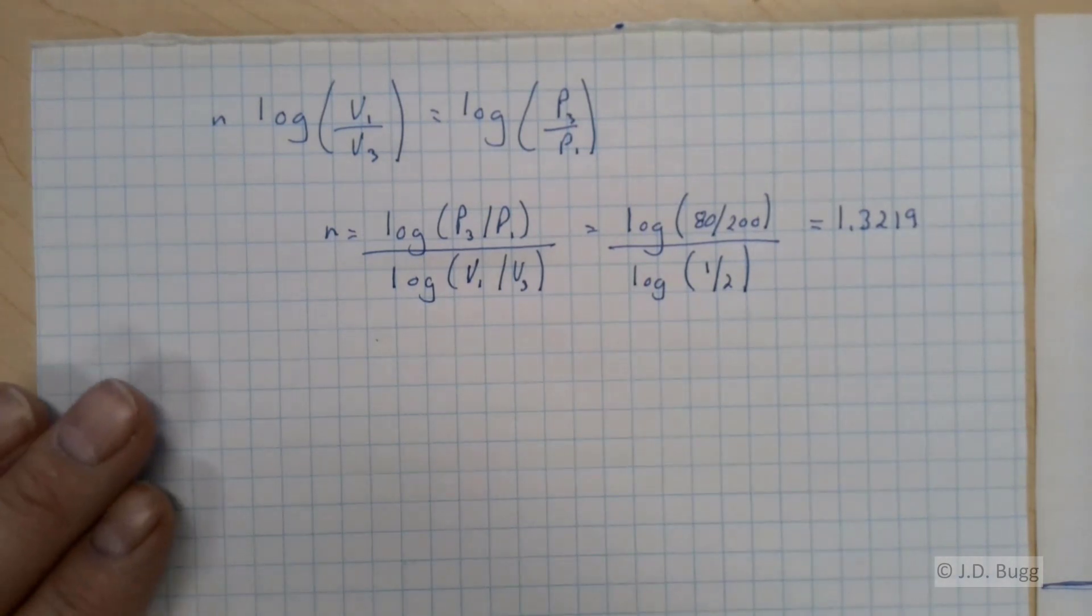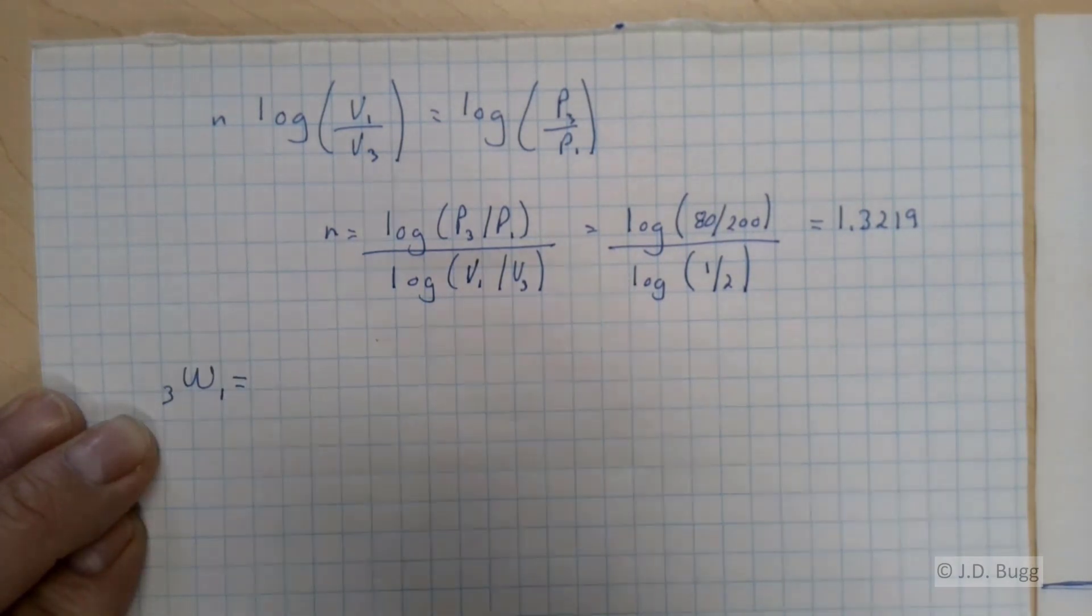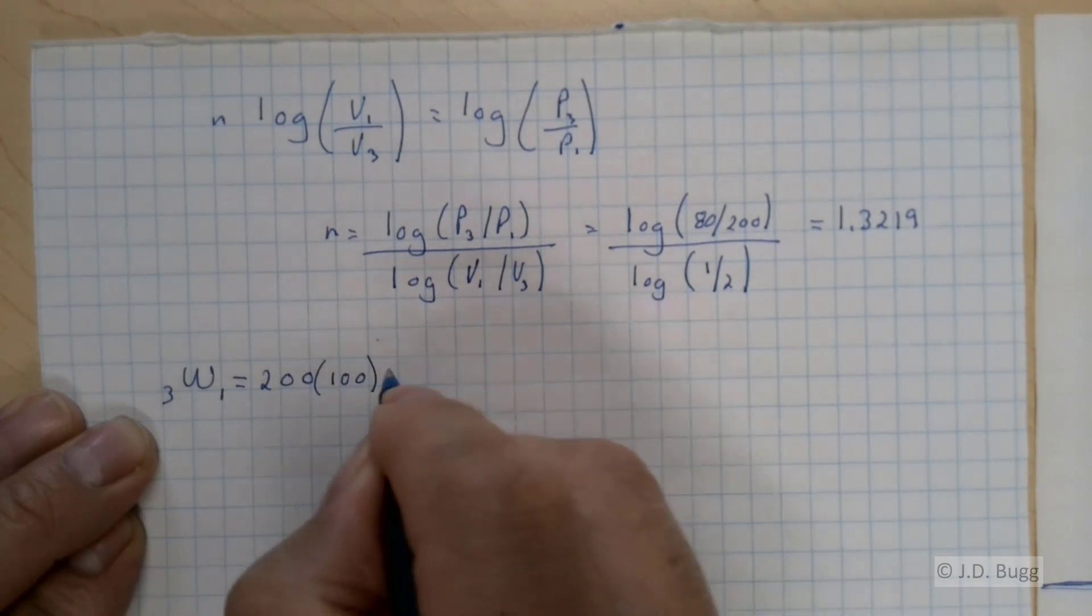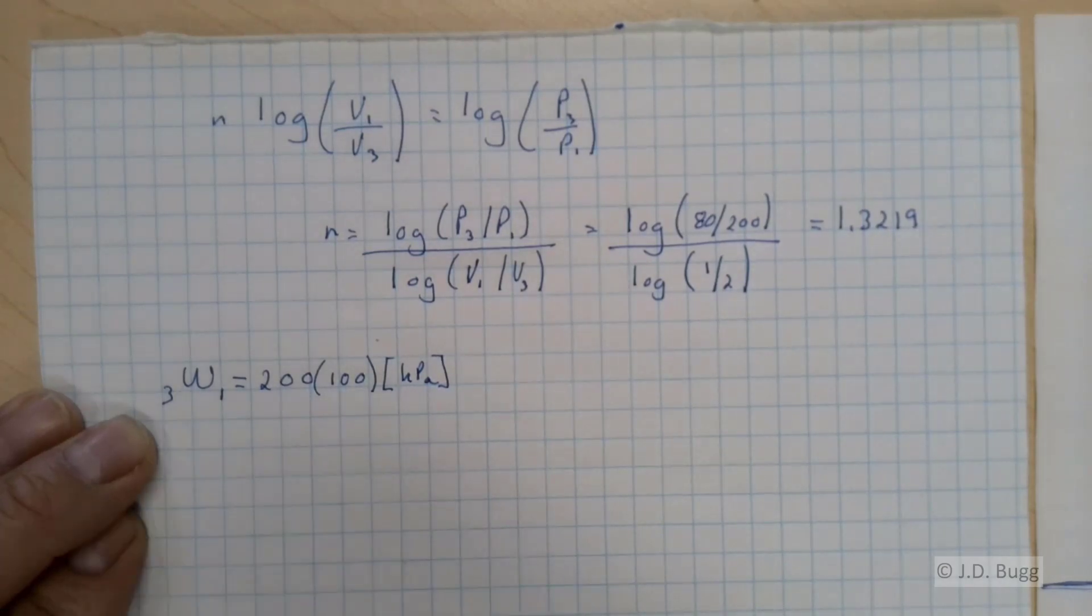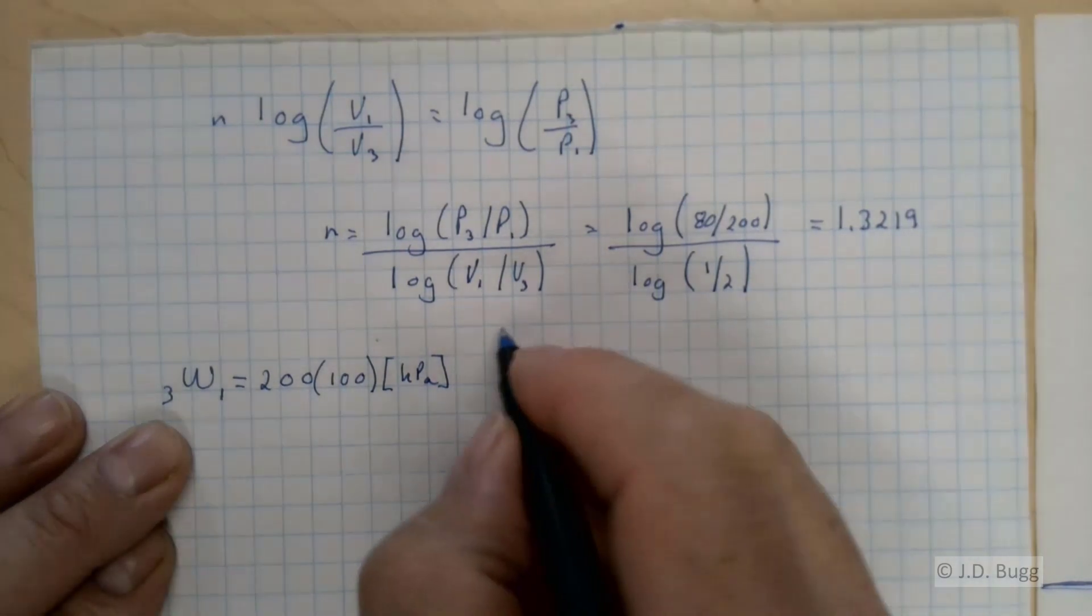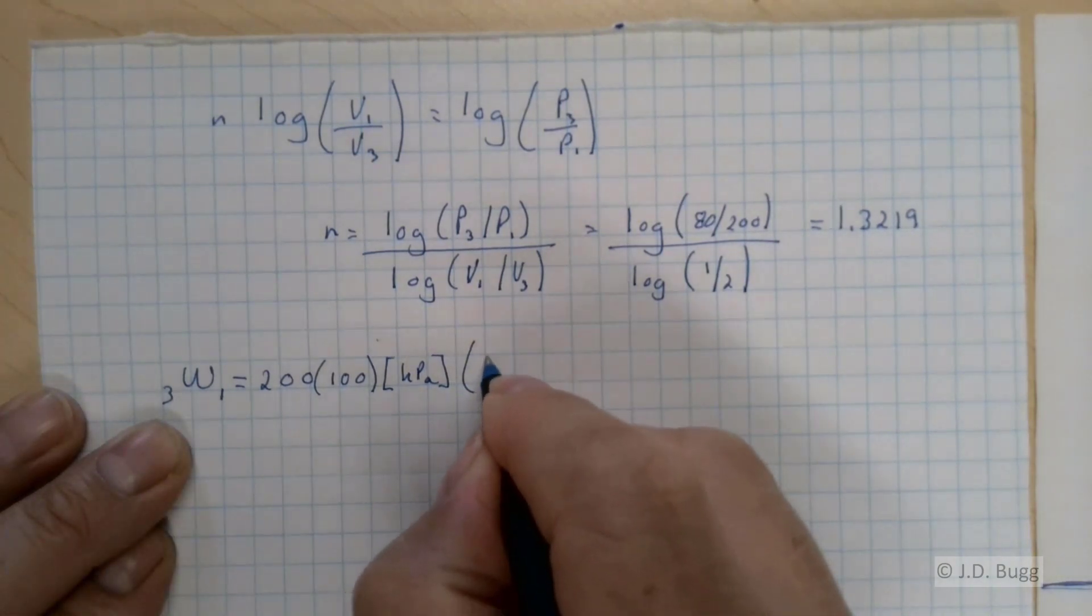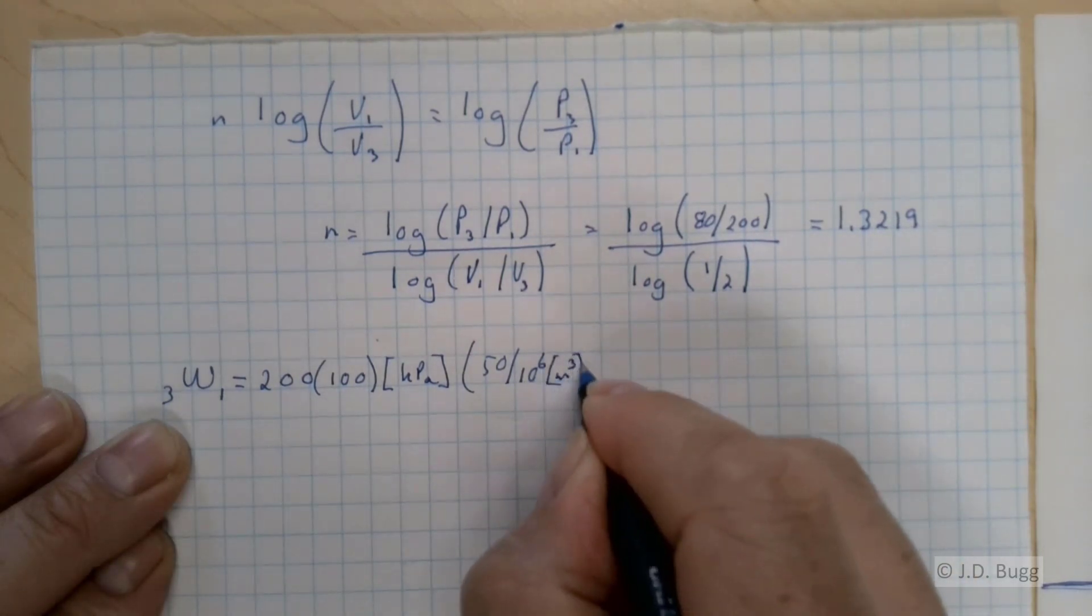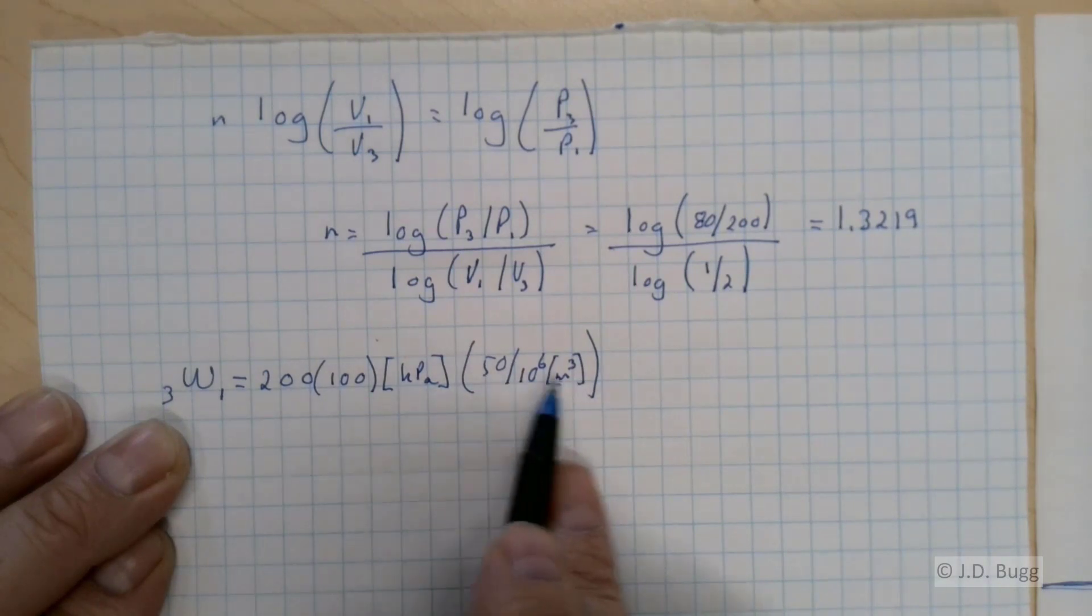So now we're ready to go back and do our work calculation. So the work from 3 to 1 will be our 200 bar multiplied by 100 to get it into kPa. This is 200 times 100 kPa times our V1, which is 50 divided by 10 to the sixth cubic meters. So that's P1 V1. Pressure in kilopascals, volume in cubic meters.